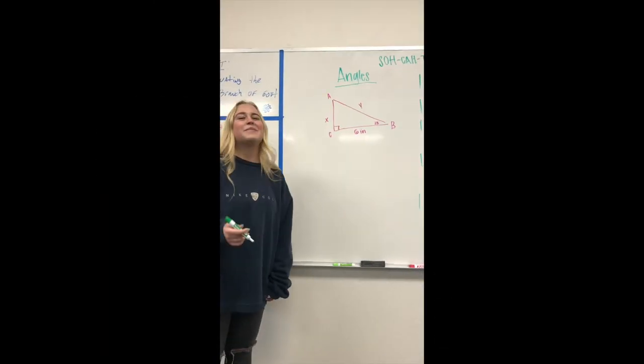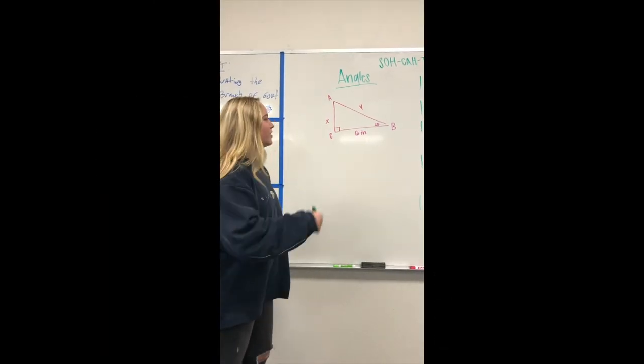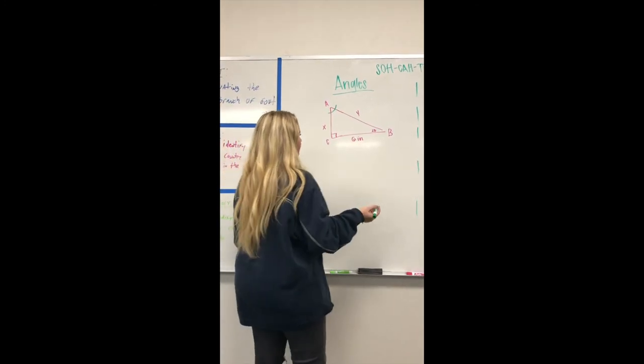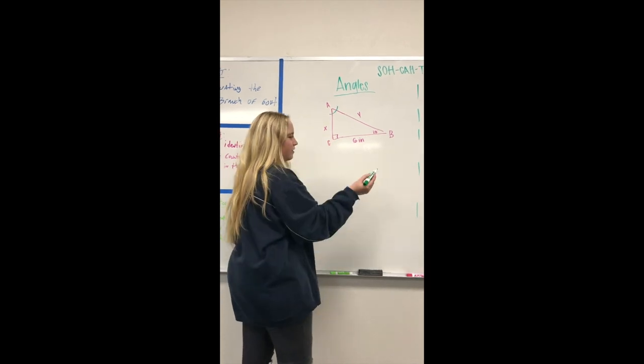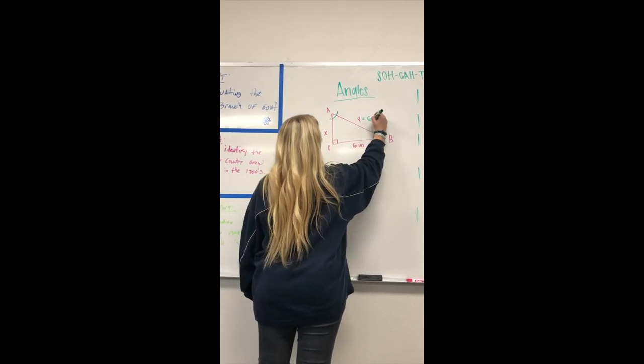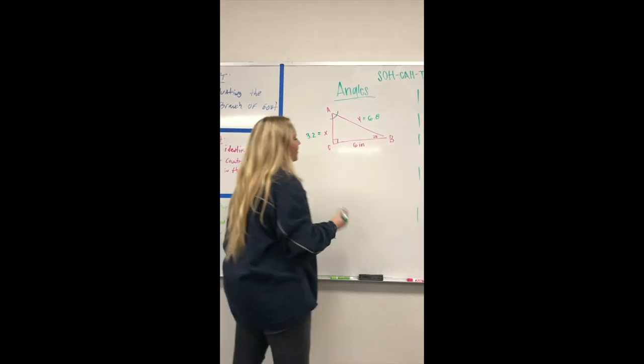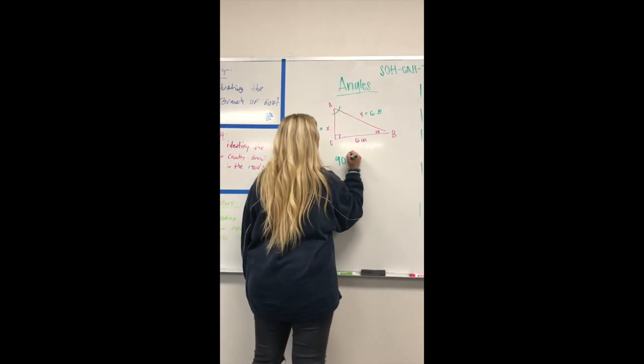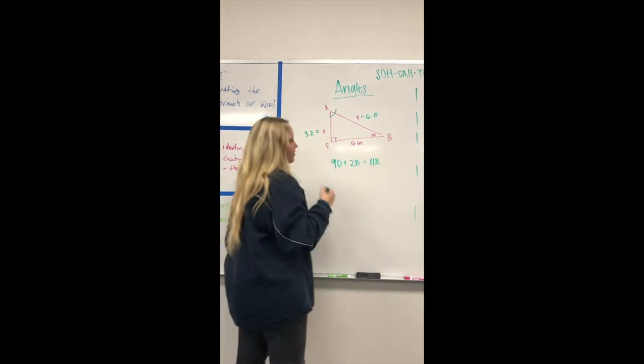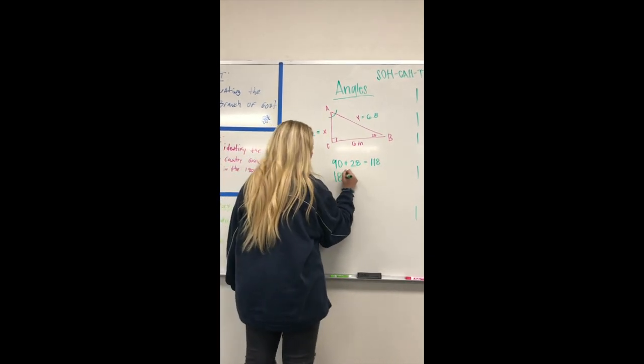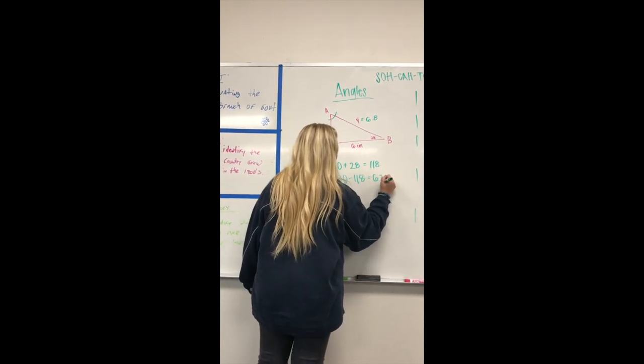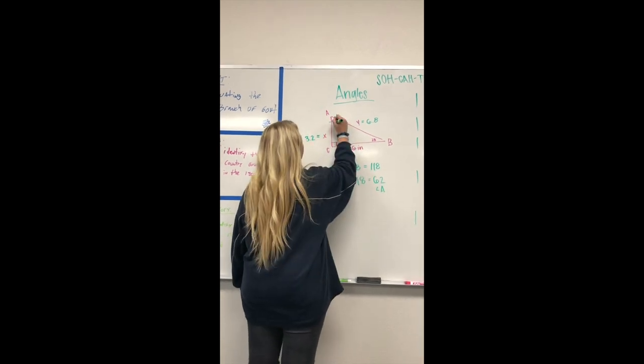This is finding the angles for the problem we just solved. First mark this angle because A is the angle you're trying to find. Label your x and y: x is 3.2 and y equals 6.8. Take 90 plus 28, which equals 118, then take 180 minus 118, which gives you 62 degrees. That's your angle A.